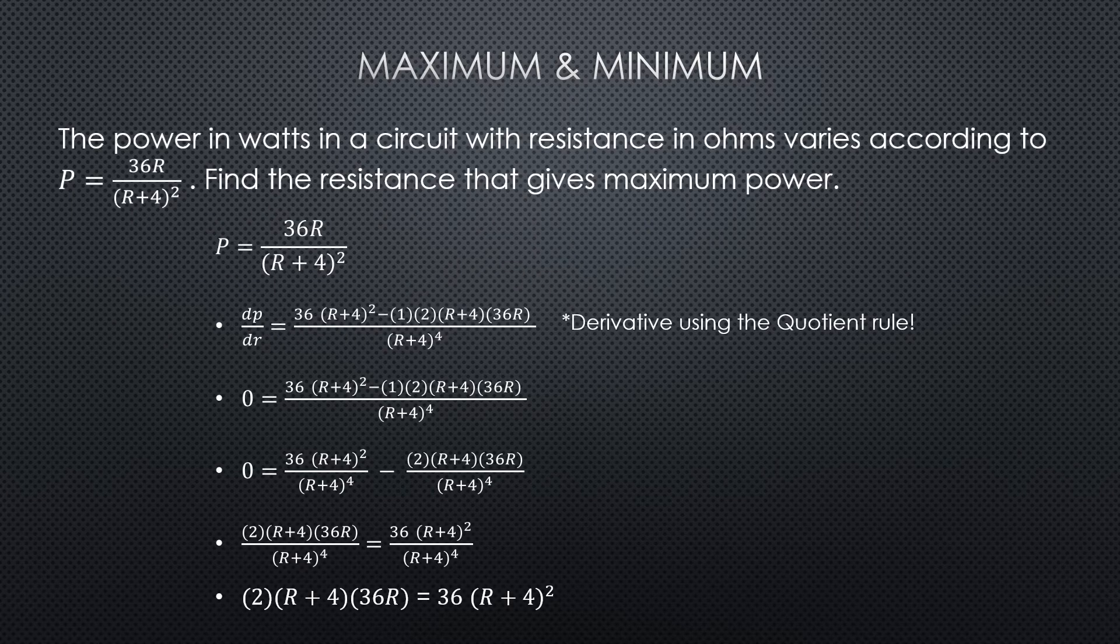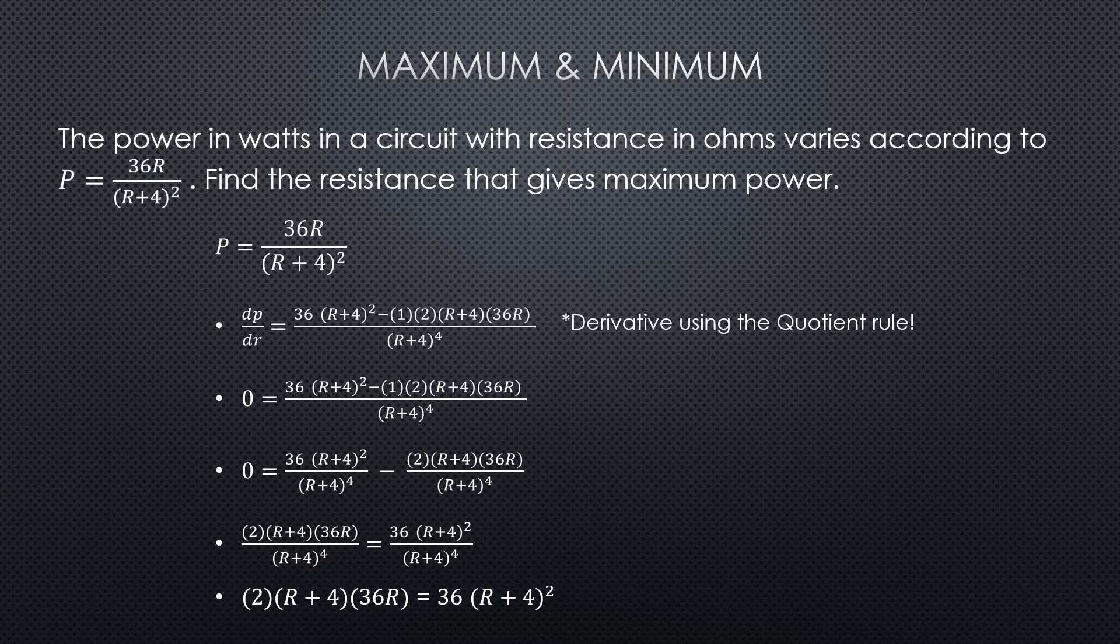Alright, so we've got our formula in terms of power and resistance. The problem is asking for the resistance that gives us the maximum power, so we're all set. Now what we need to do is take the derivative, because we want to set that to zero, set that instantaneous slope to zero, because we know that's going to be where our max is in the equation.